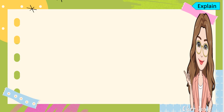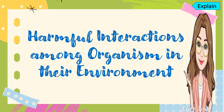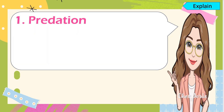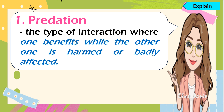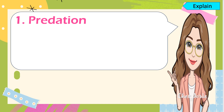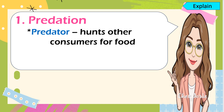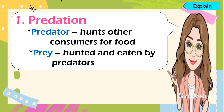For better understanding, let's discuss the harmful interactions among organisms in their environment. The first one is what we call predation. When you say predation, it is the type of interaction where one benefits while the other one is harmed or badly affected. For predation, always remember two terms: the predator, which is the animal that hunts other consumers for food, and the prey, which are hunted and eaten by predators.